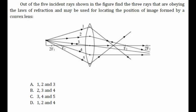The third incident ray passes through the optical center of the lens and goes undeflected. As we know, a ray passing through the optical center goes undeflected, so the third ray is also shown correctly.